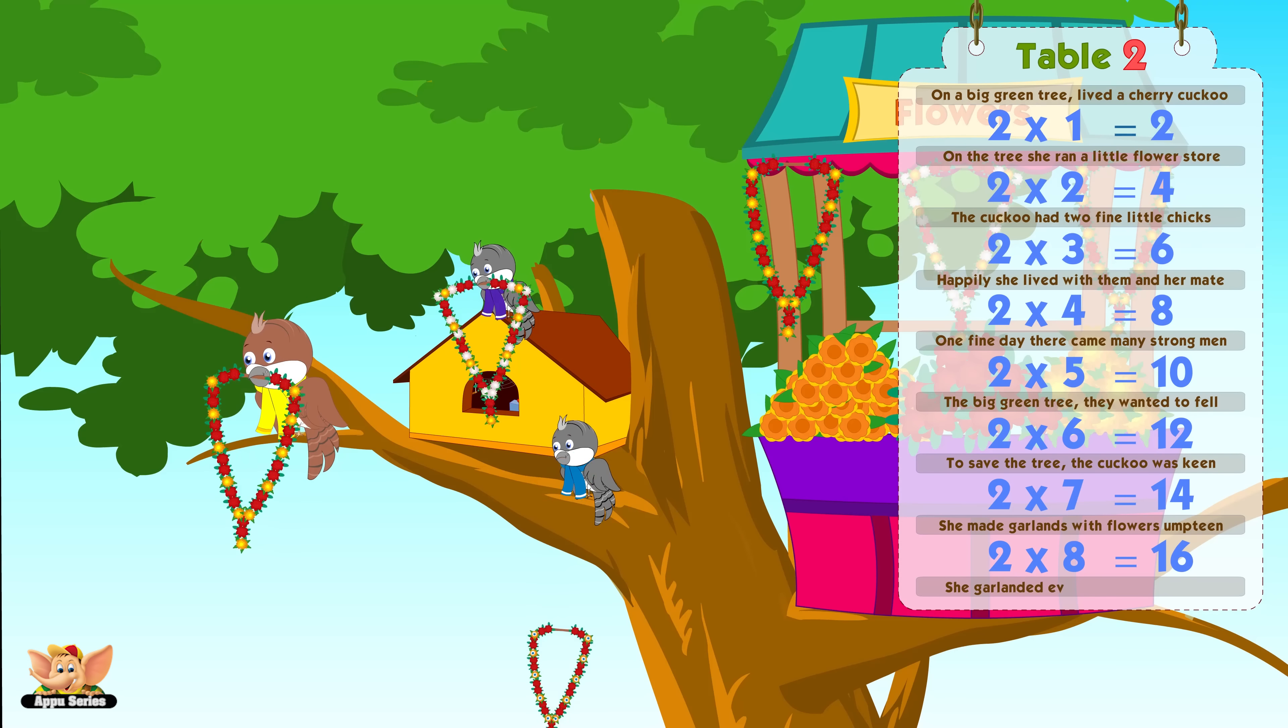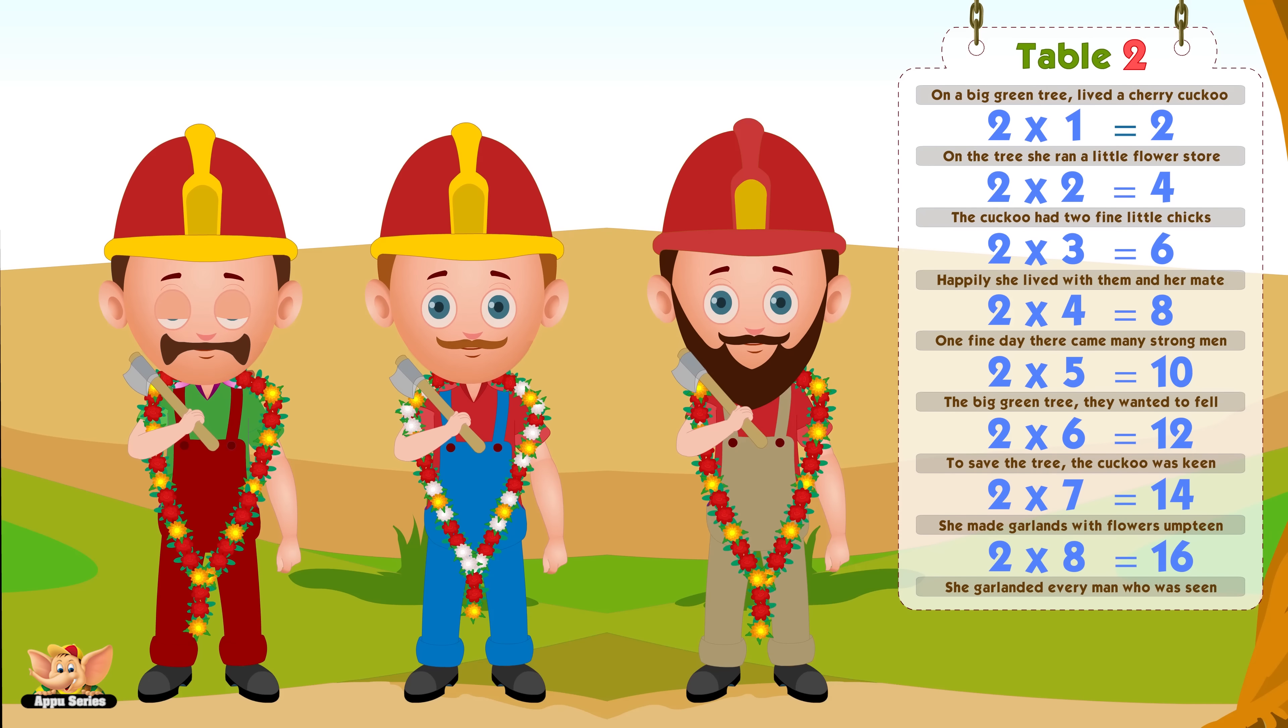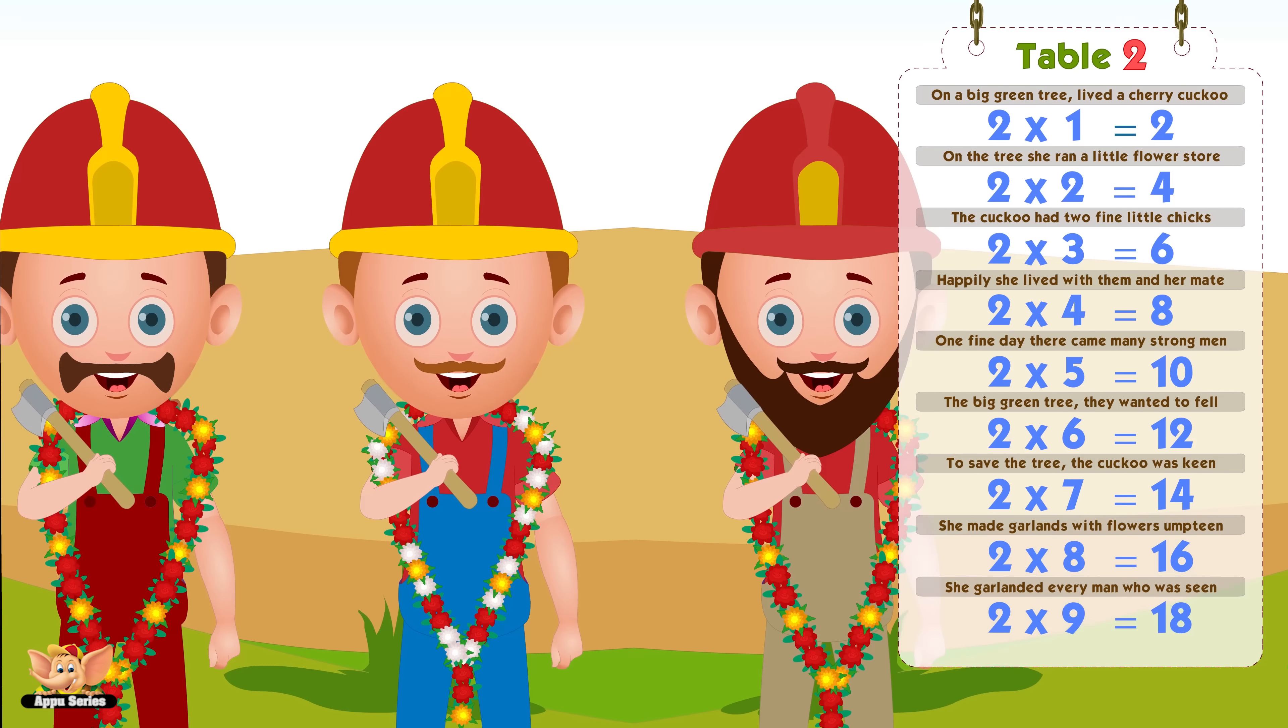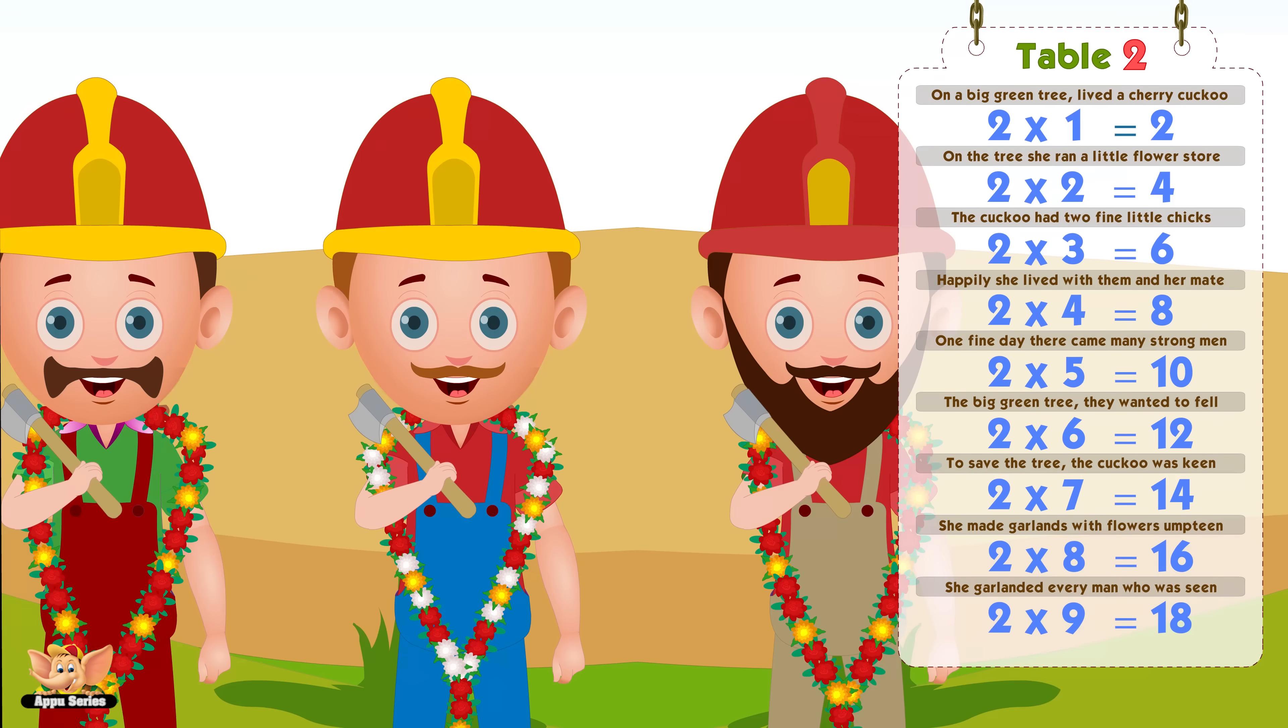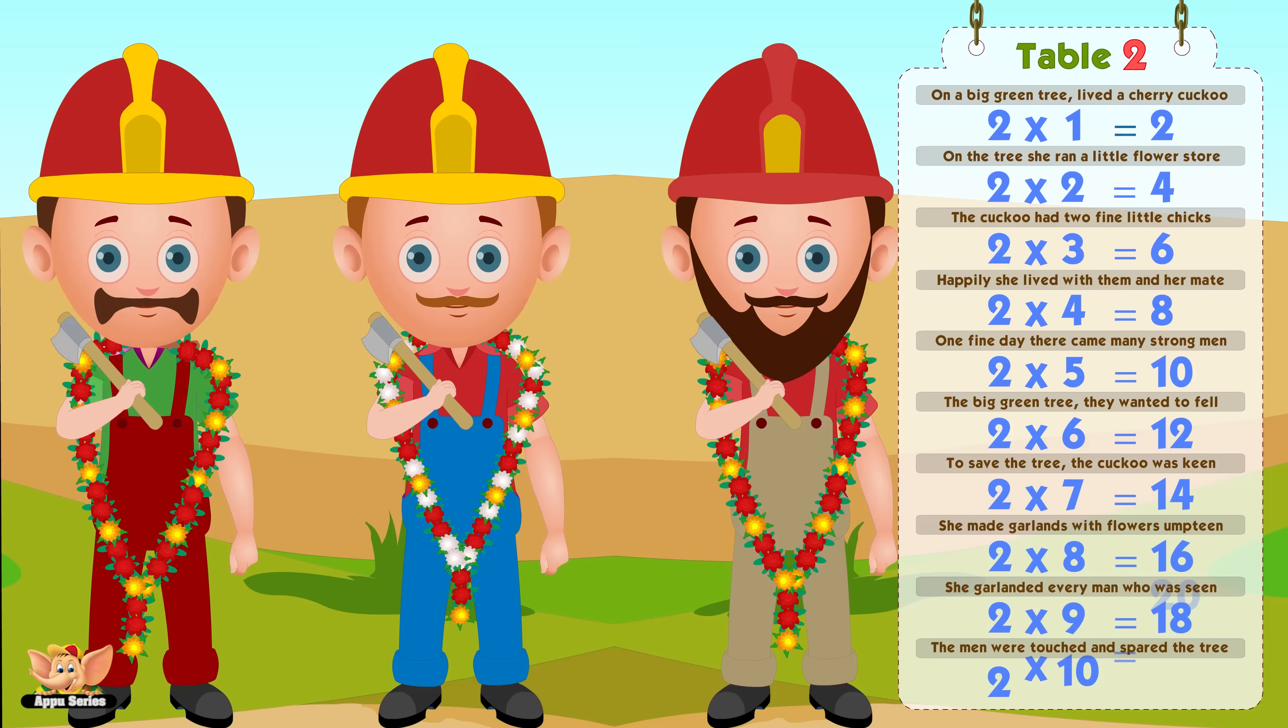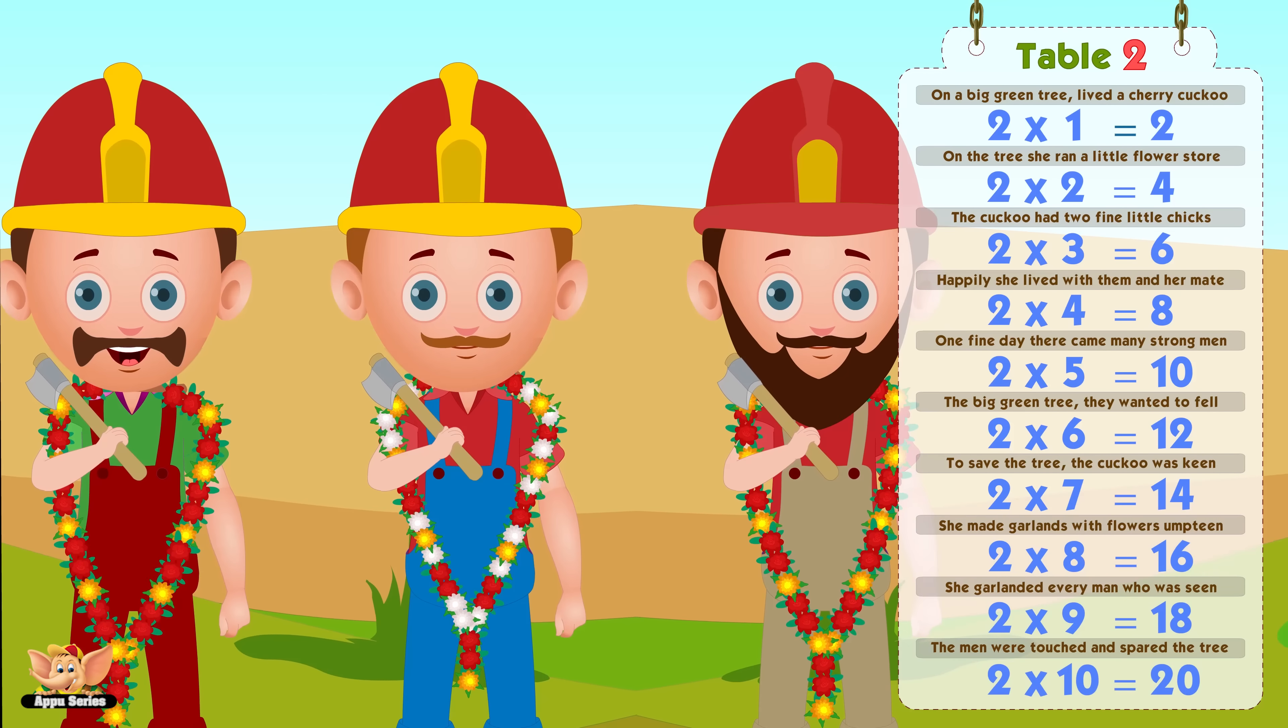She garlanded every man who was seen. Two nines are number eighteen. The men were touched and spared the tree. Two tens are number twenty.